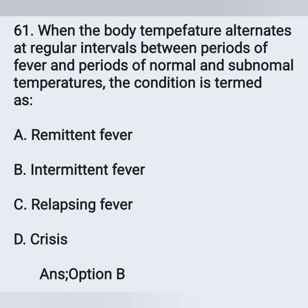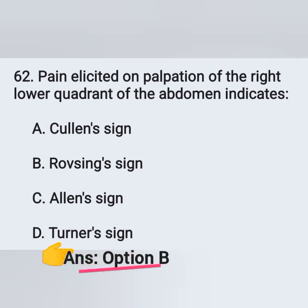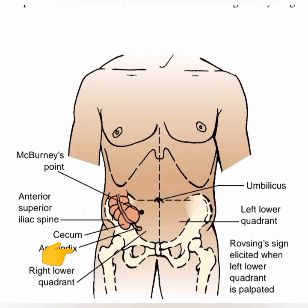Question 62: Pain elicited on palpation of the right lower quadrant of the abdomen indicates: Option A: Equivalent sign, Option B: Rovsing sign, Option C: Allen sign, Option D: Turner sign. Pain on palpation of the right lower quadrant indicates Rovsing sign — Option B is the correct answer. Rovsing sign is one of the manifestations of appendicitis.